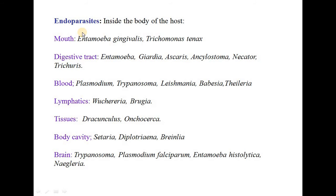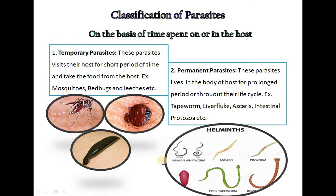A summary of endoparasites by location: in the mouth — Entamoeba and Trichomonas; in the digestive tract — Entamoeba, Giardia, Ascaris, Ancylostoma, Necator, and Trichuris; in the blood — Plasmodium, Trypanosoma, and Leishmania; in lymphatic tissue — Wuchereria and Brugia; in other tissues — Dracunculus; in body cavities — Sterea, Dipetalonema, and Breinlia; and in the brain — Trypanosoma, Plasmodium falciparum, and Entamoeba histolytica.